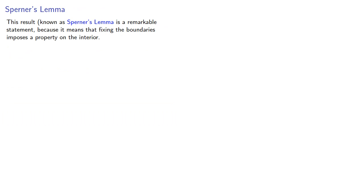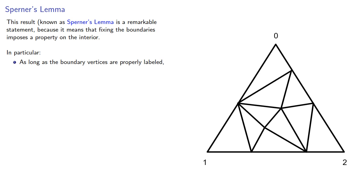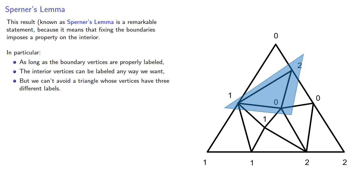This result, known as Sperner's Lemma, is a remarkable statement because it means that fixing the boundaries imposes a property on the interior. In particular, as long as the boundary vertices are properly labeled, the interior vertices could be labeled any way we want, but we can't avoid a triangle whose vertices have three different labels. We can think of this as a smaller version of the original, which leads us to an even more surprising result. We'll take a look at that next.